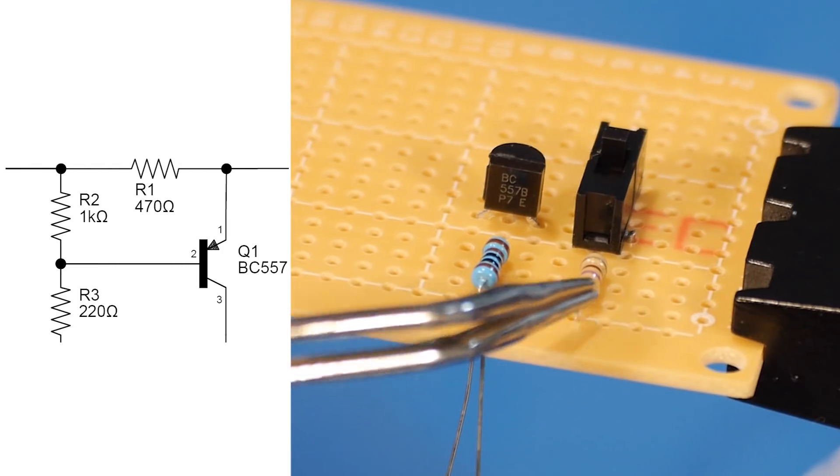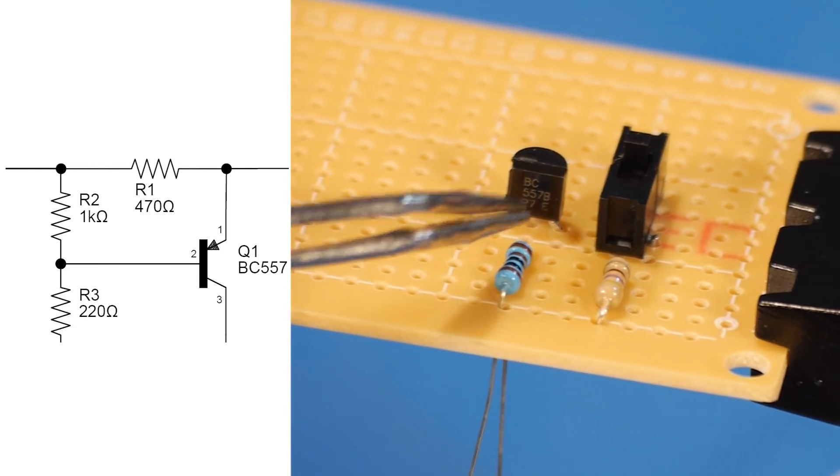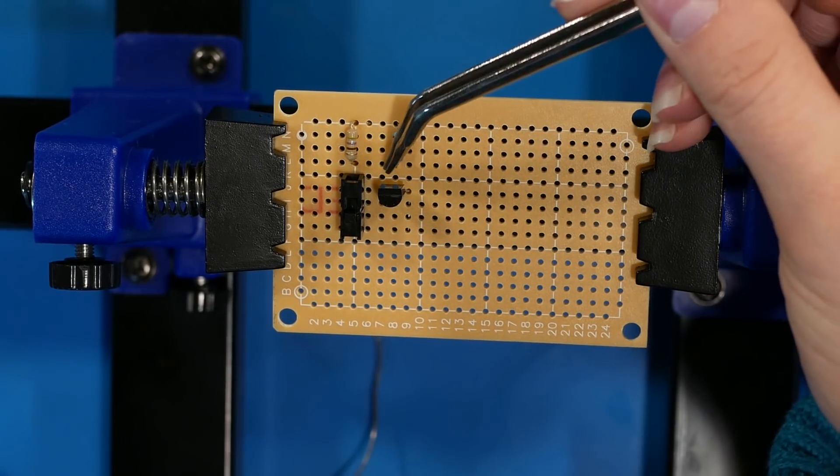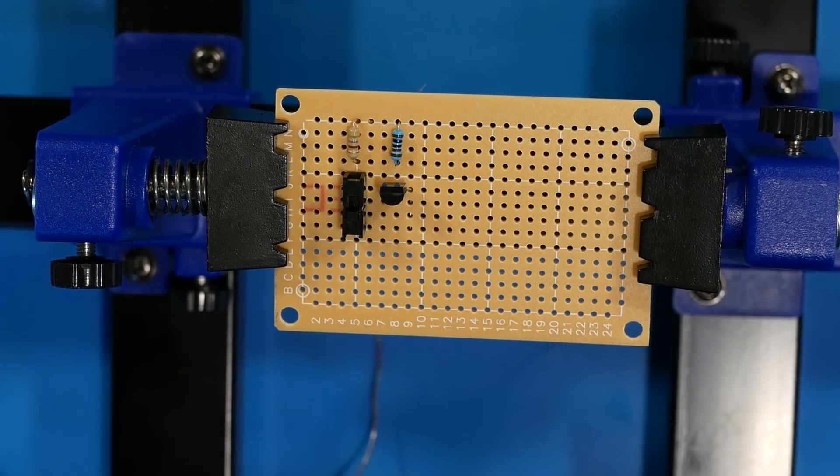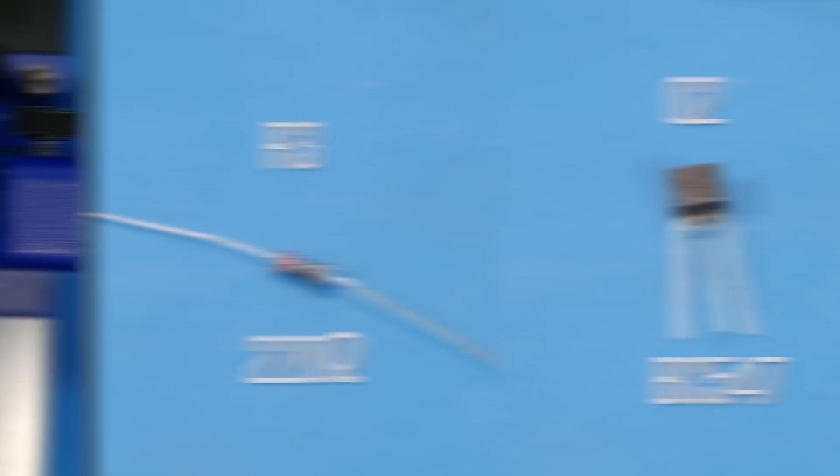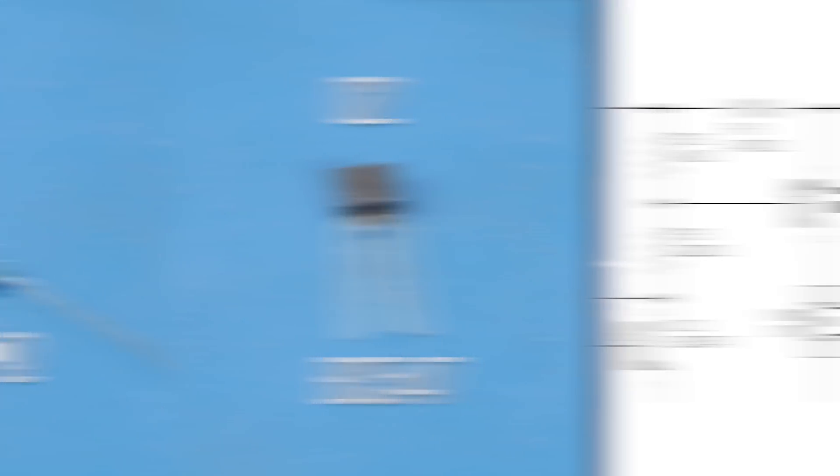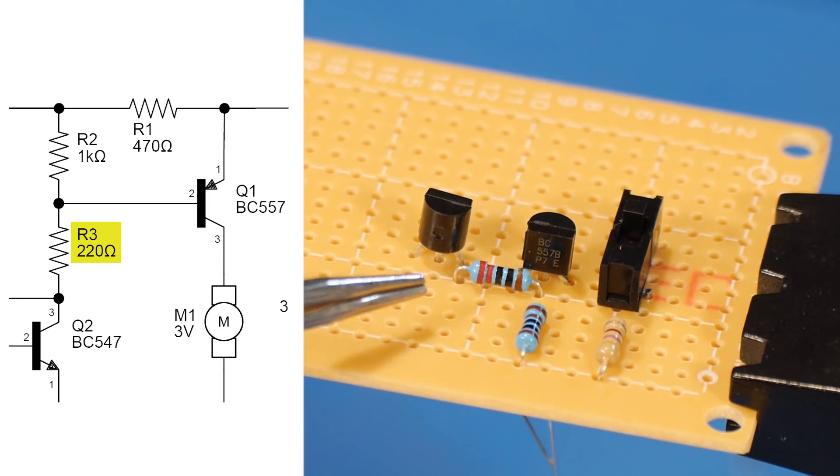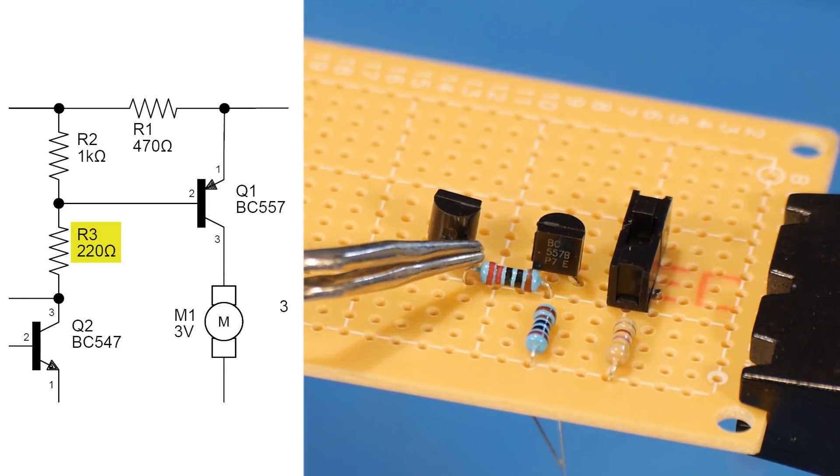R2 is going to connect to R1 and also the base of Q1. I'm going to leave one hole space so I can leave R3 to connect Q1 and Q2. R3 connects the base of Q1, that's the middle pin, to the collector of Q2.